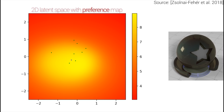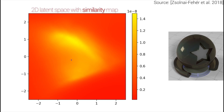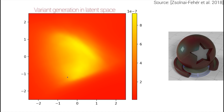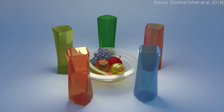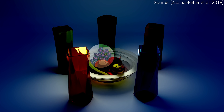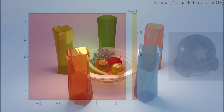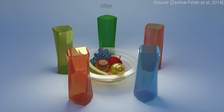We can further improve this by exploring different combinations of the three learning algorithms. In the end, we can assign colors to the background that describe either whether the AI expects us to like the output, or how similar the output will be. A nice use case of this is where we have a glassy still life scene, but the color of the grapes is a bit too vivid for us. Now, we can go to this 2D latent space and adjust it to our liking in real-time. Much better.